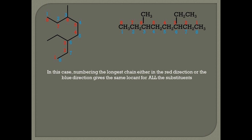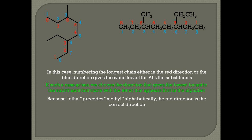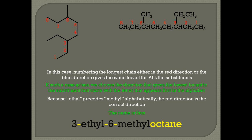Rule twelve. Consider the following molecule where numbering the longest chain in either the red direction or the blue direction gives the same locant for all substituents. If such a case arises, we choose the direction that gives the lowest locant to the first substituent alphabetically. We have ethyl and methyl. Since ethyl precedes methyl alphabetically, the red direction is correct because it gives the lowest number to the ethyl substituent. The name is therefore 3-ethyl-6-methyloctane.